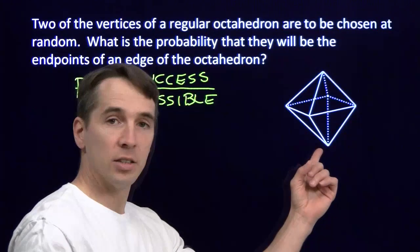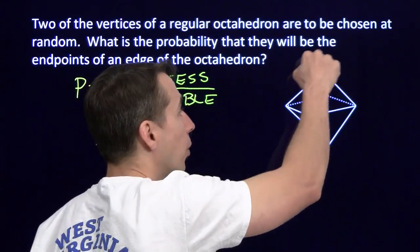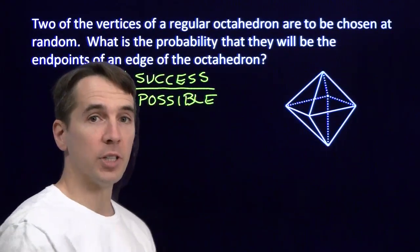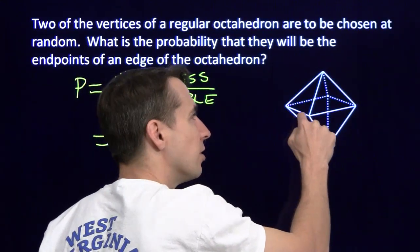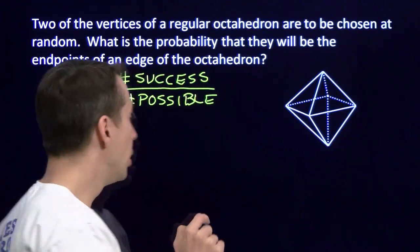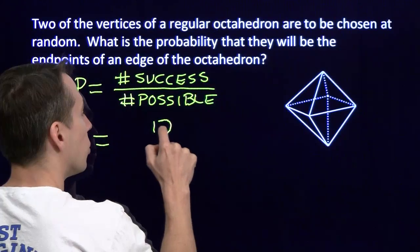I've got four edges down here connected to the bottom vertex, four edges up here connected to the top vertex, and four edges that form this square in the middle. So that gives me a total of 12 successes.